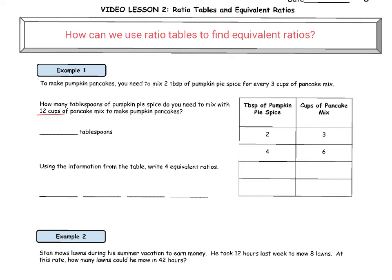We started this ratio table already where we have two tablespoons of pumpkin pie spice, three cups of pancake mix, four tablespoons of pumpkin pie spice, six cups of pancake mix. This relationship is going to stay constant. That means for every two tablespoons of pumpkin pie spice, we need to add three cups of pancake mix. If we were to add two more tablespoons of pumpkin pie spice we would have six. Now in the right column we have to add three more cups of pancake mix, which is nine.